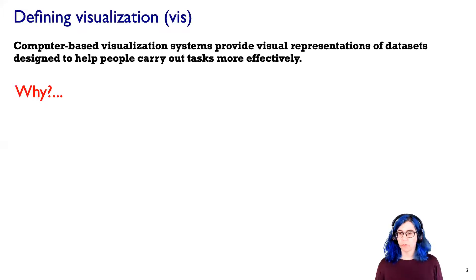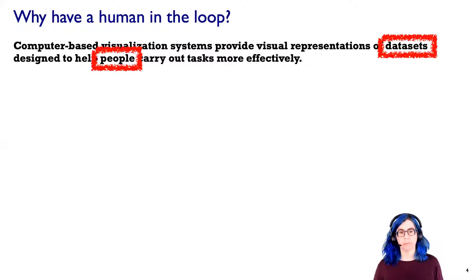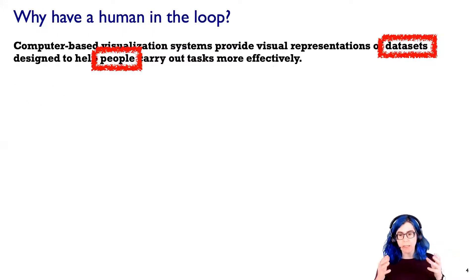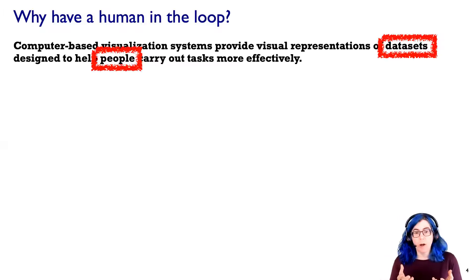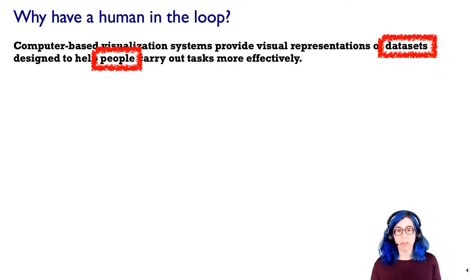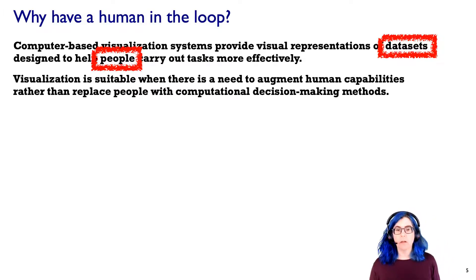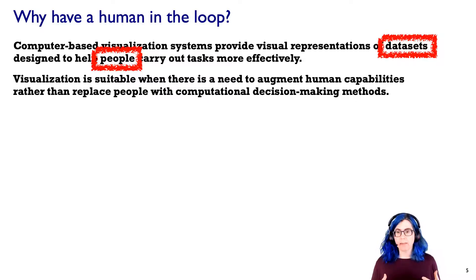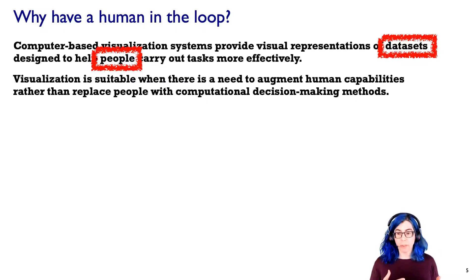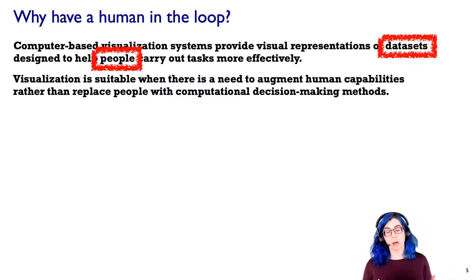Why is this an interesting definition? Let's unpack some of the words inside of this. Notice how we've got data and people in the same sentence. Why do we want to have a human in the loop? Visualization is suitable when there's a need to augment the capabilities of a human, rather than simply replacing people with purely computational decision-making methods.